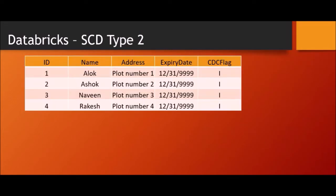This is a simple table — suppose it's an employee table which has ID, name, and address. The other two columns are used for maintaining your CDC. You are going to get the ID, name, and address from your source. Suppose you have four records, all of them have different IDs — ID is unique. The expiry date is 12/31/9999, which means these are all active records.